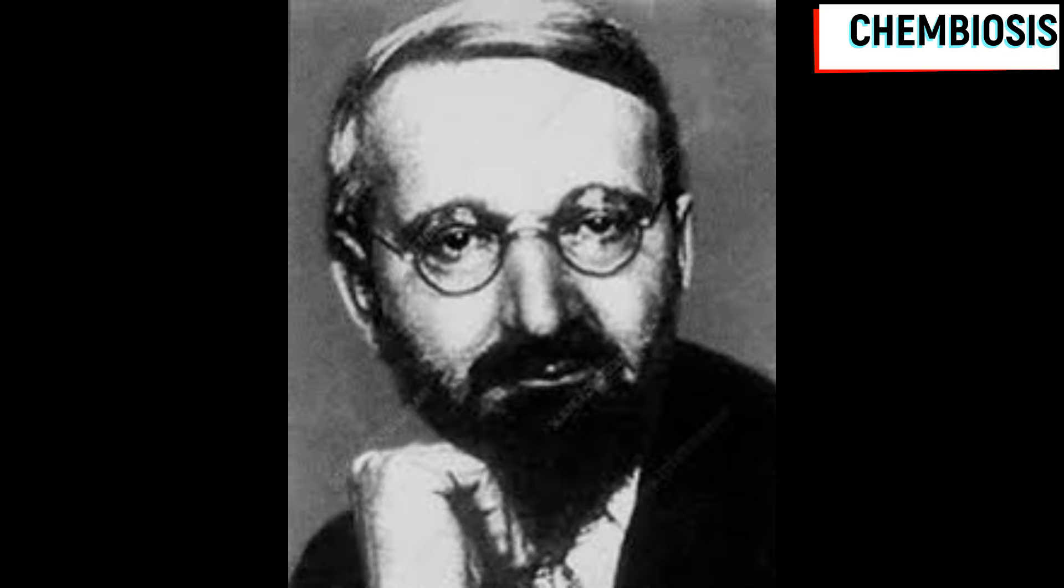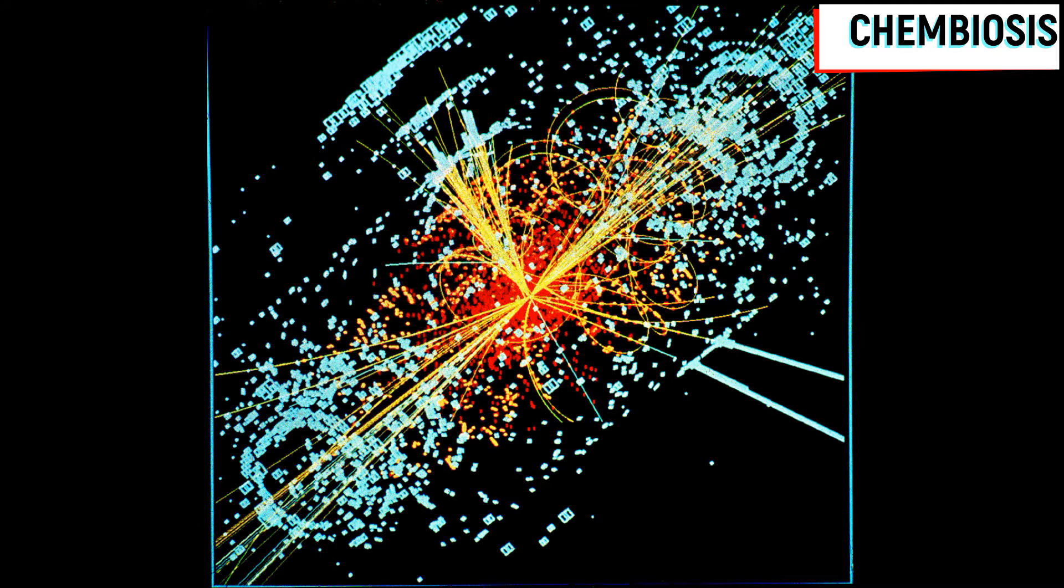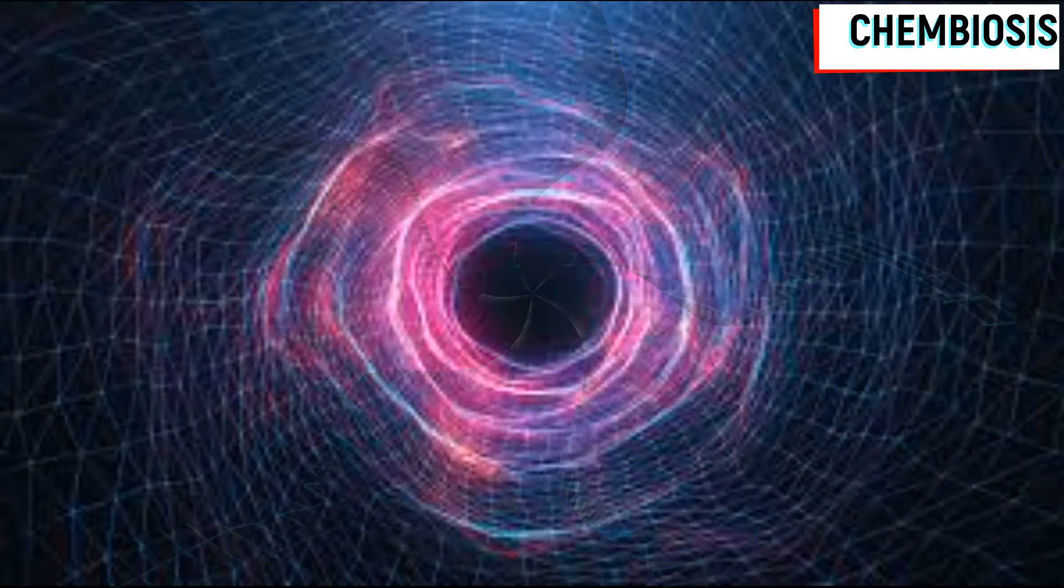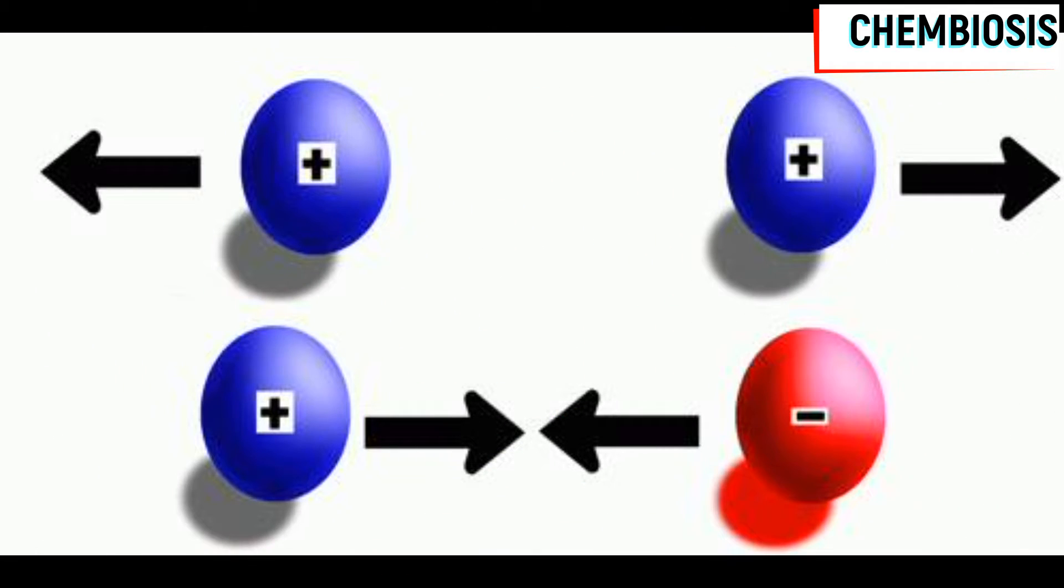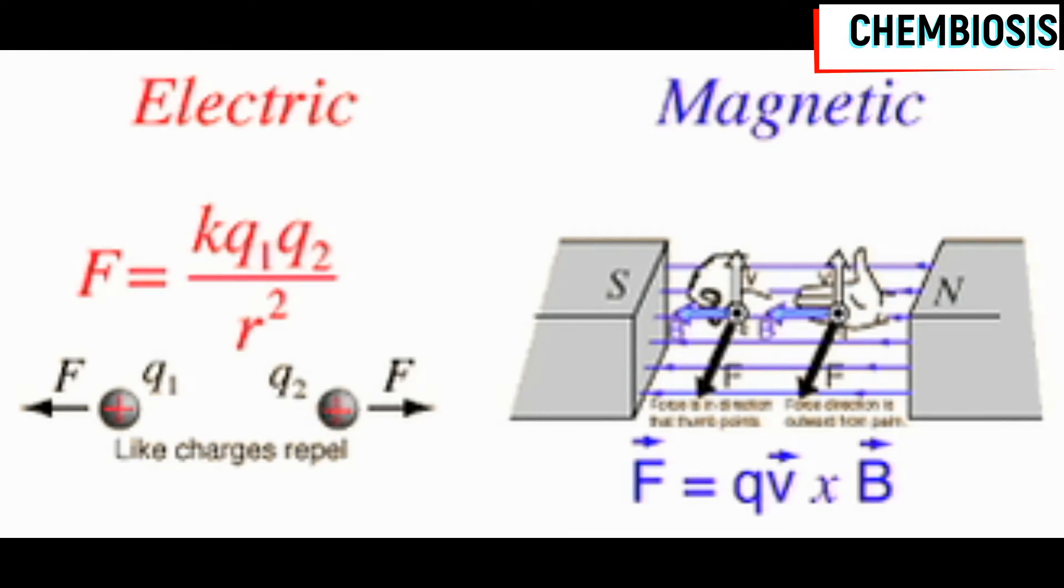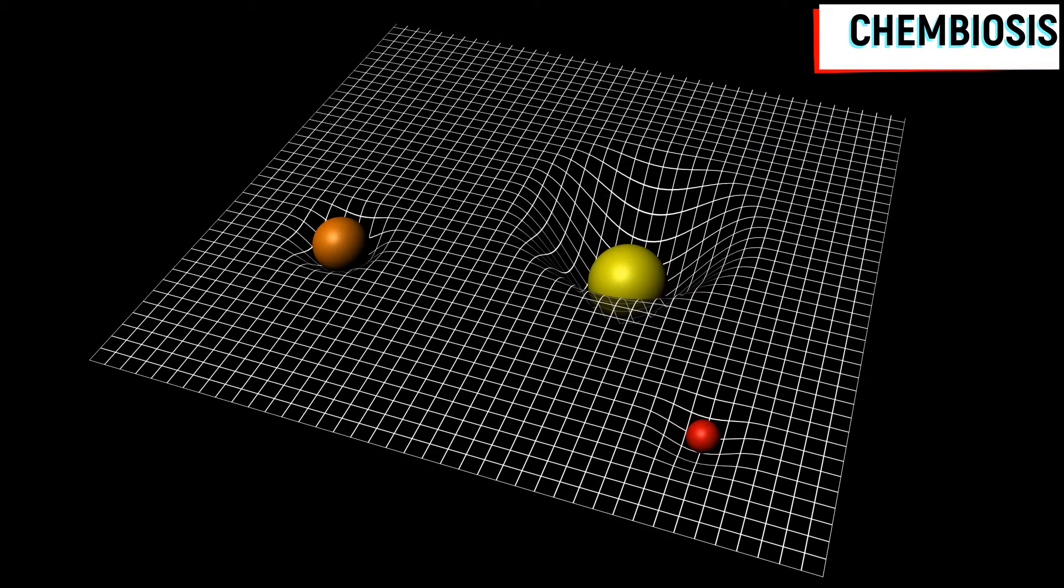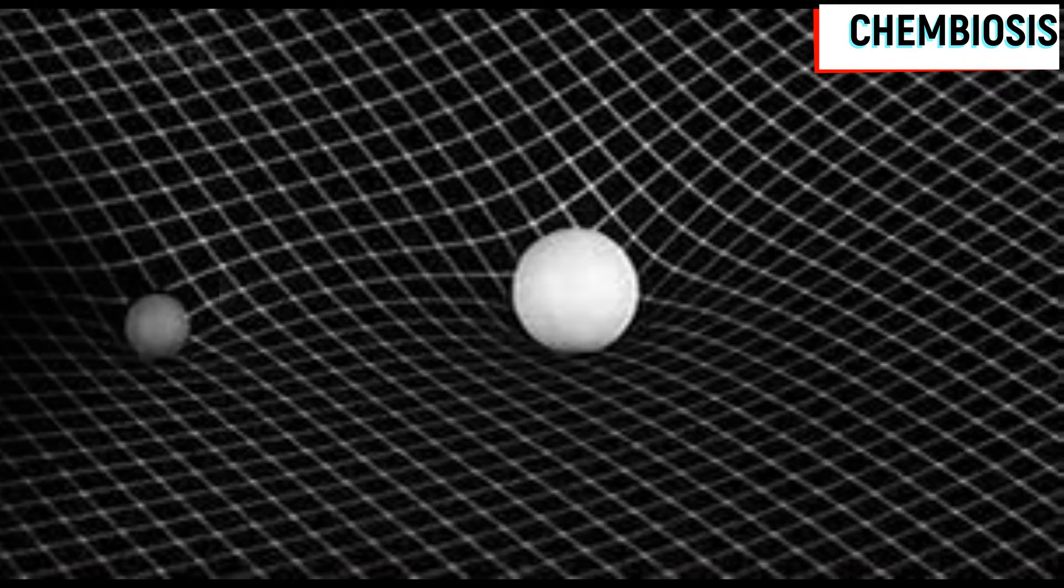This idea of Einstein made Kaluza think in a different way. He was searching for a theory which can describe all the events in the universe. This theory is also famously known as unified theory or theory of everything. Kaluza thought that like Einstein, he can also explain other forces in terms of curvature in space-time. There is a force known as electromagnetic force which acts between electrically charged particles. This force is a combination of electrical force and magnetic force. Kaluza thought that this electromagnetic force can also be described as curvature in space and time. However, it brings another question: where will this curvature be produced? Because Einstein has already used this concept of curvature in space to explain gravitational force. So where will this curvature occur to explain electromagnetic force?